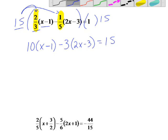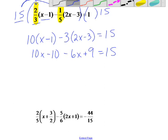Now that you're in here, you can go ahead and distribute. 10x minus 10 minus 6x plus 9 equals 15. That's a linear equation, so you'd keep going from there. I'm going to go ahead and stop on that one, but you would complete it.